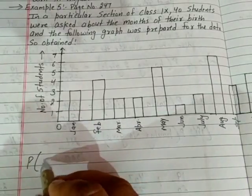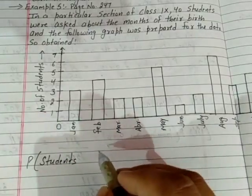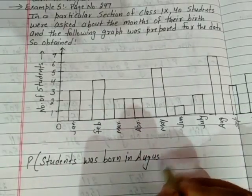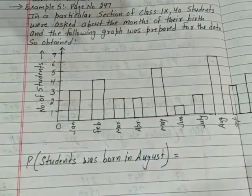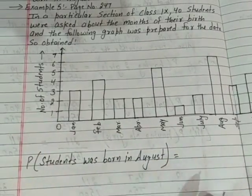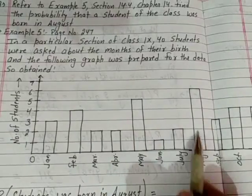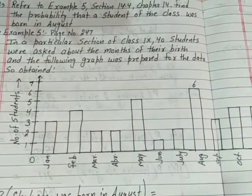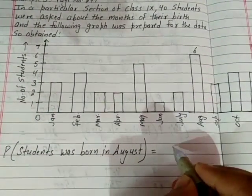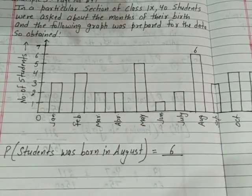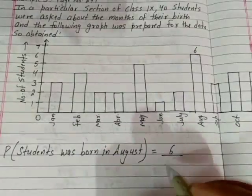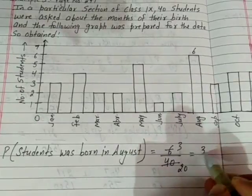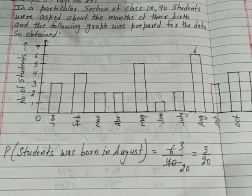Probability of students born in August. Favorable outcomes: 6 students were born in August. The total number of students is 40. So the probability is 6 over 40, which simplifies to 3 over 20. This is the probability that the student was born in August.